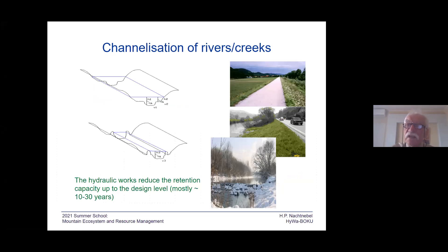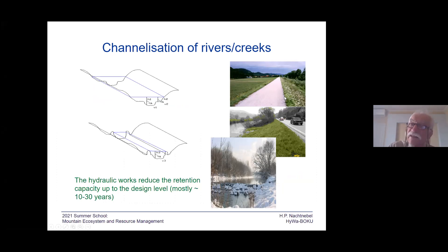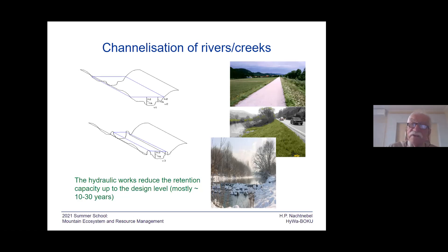What are the consequences? In the photo, you see the levee — on the right side is the river, and this was formerly a floodplain. Due to the levee, we have cut off the floodplain from the river; only in very extreme cases will this area be flooded by overtopping. To model that, you need a hydraulic model — one without any levee and one with a levee — and then you can see that due to losses in retention capacity, some increase in the flood peak downstream is to be expected.